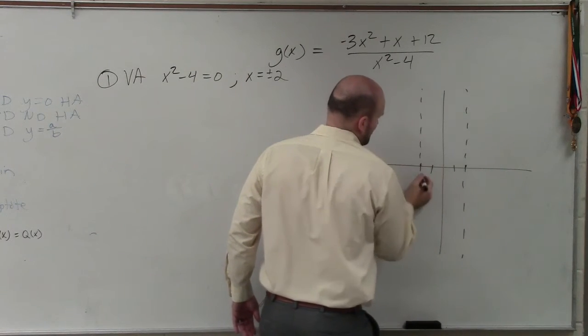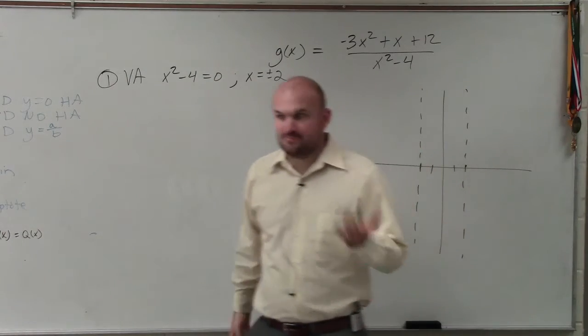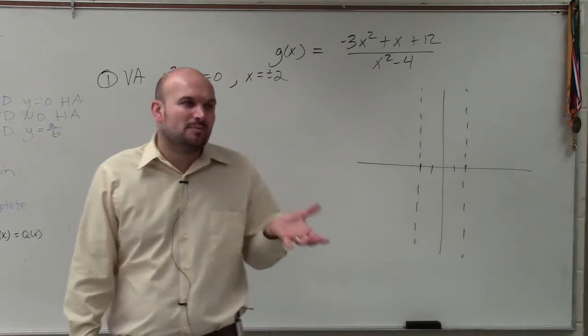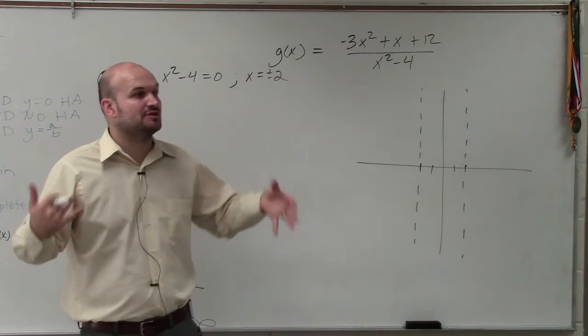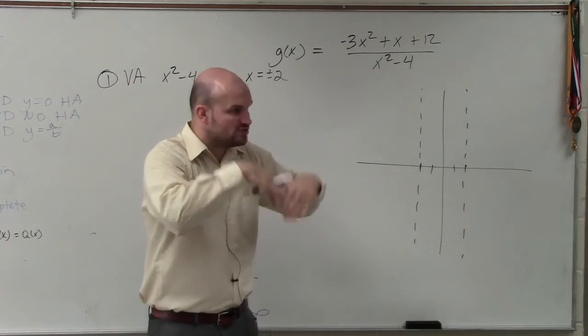Now remember your vertical asymptotes, your graph is never going to intersect. But the important thing about an asymptote is that it's going to be the line that your graph is going to approach. So we know our graph is going to approach these lines.